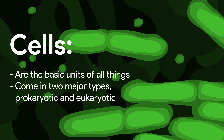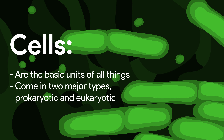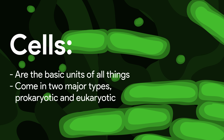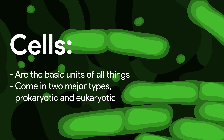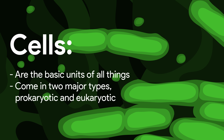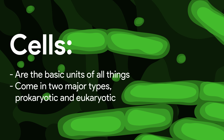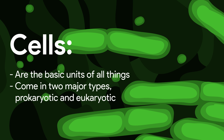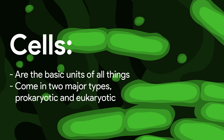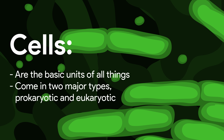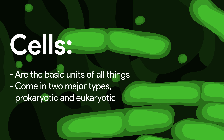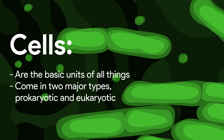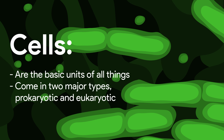All living organisms are made up of cells. Some organisms are made up of just one cell, like the amoeba. We call these unicellular organisms. Some organisms, like plants and animals, are made up of many cells — millions and millions of cells. We call these multicellular organisms.